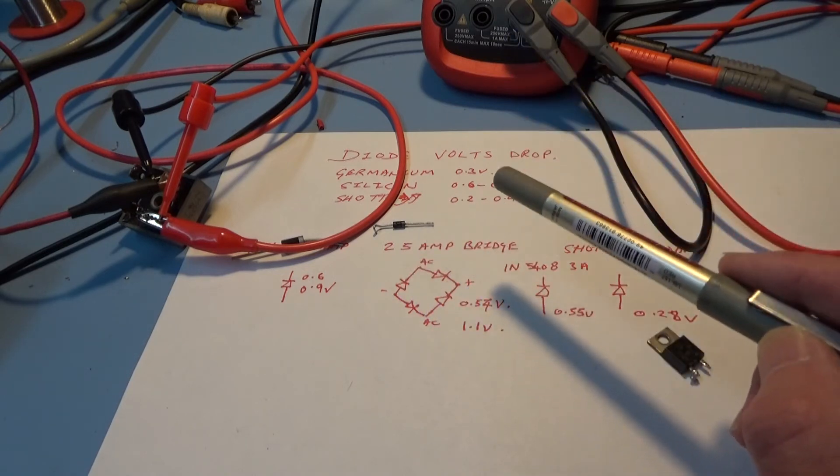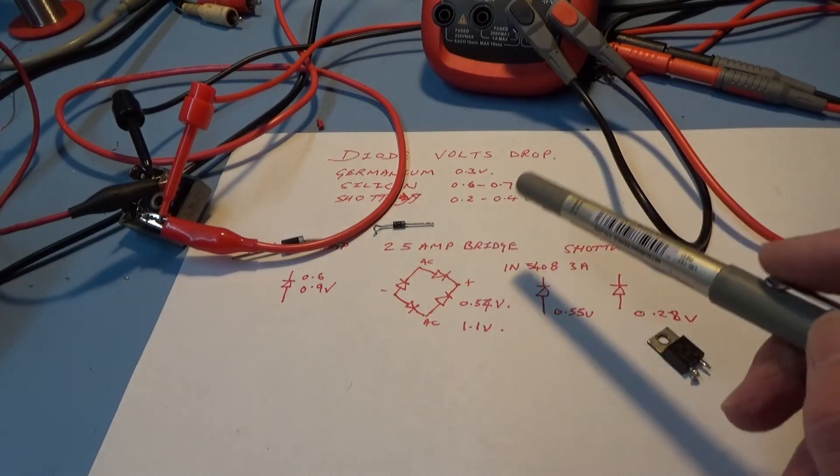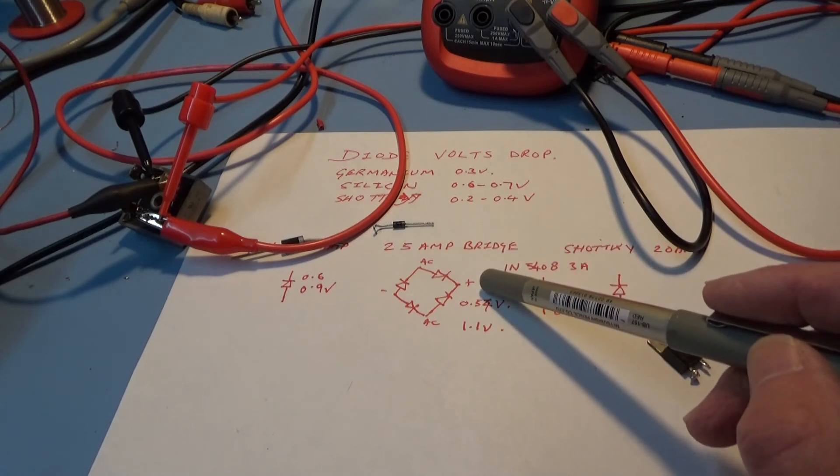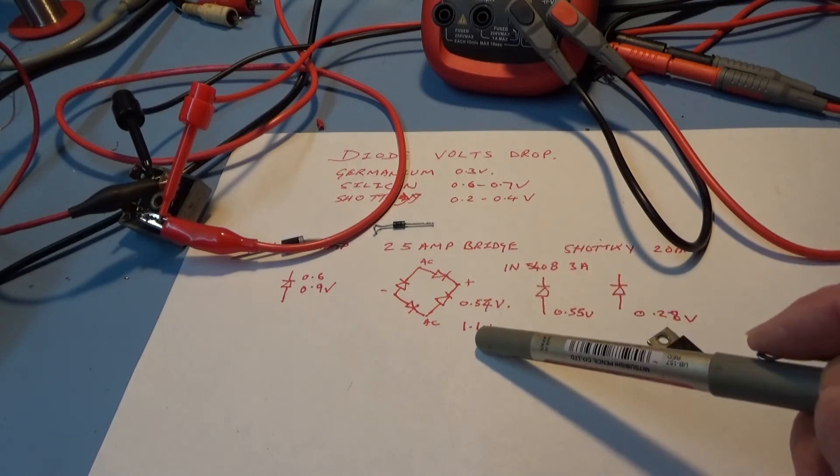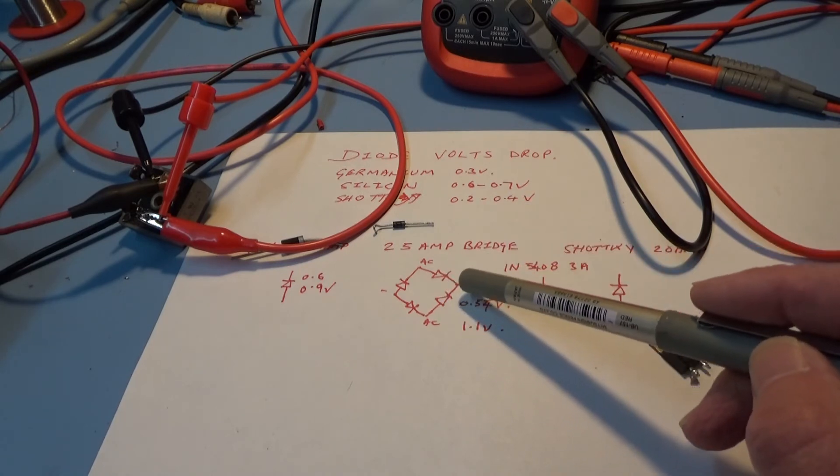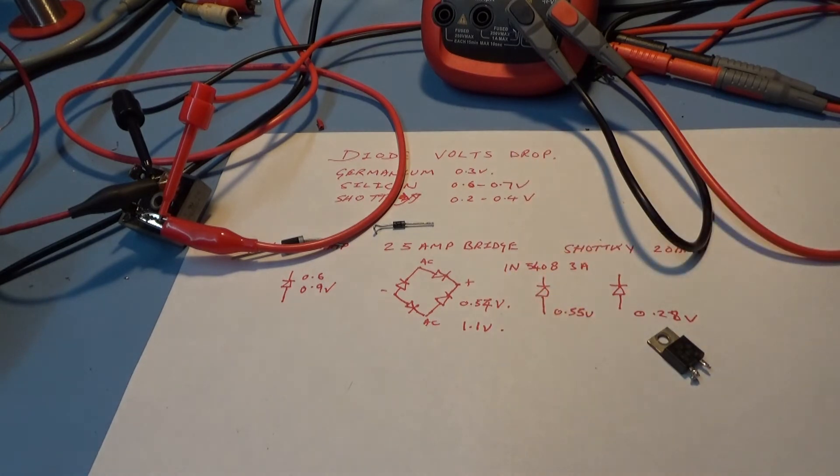Of course in a bridge rectifier there'll be two diodes conducting at any one time, so that's going to lead to a lot of heat at high current and a lot of voltage drop, over two volts drop normally when you're running that bridge rectifier at high currents. Just something I came across when I was making linear power supplies years ago for amateur radio stuff that needed 20 or 25 amps.